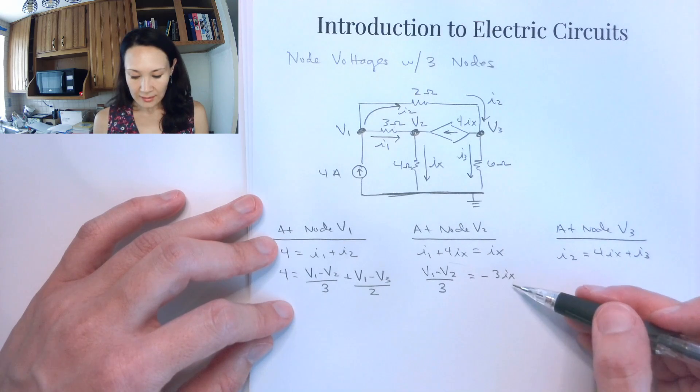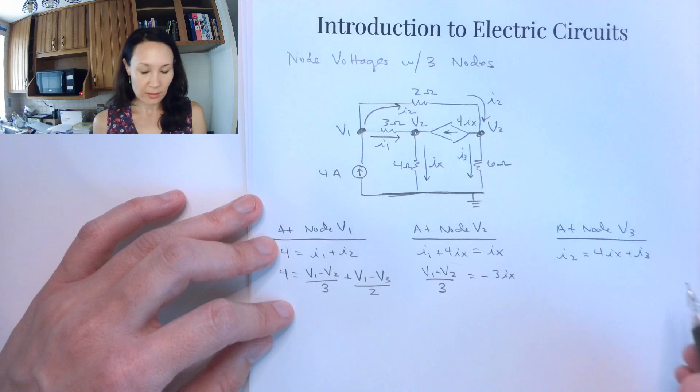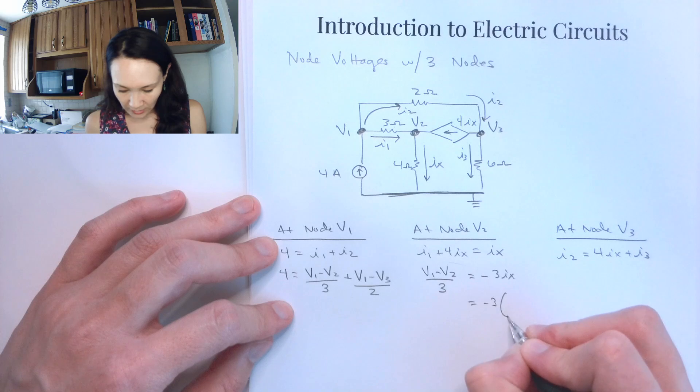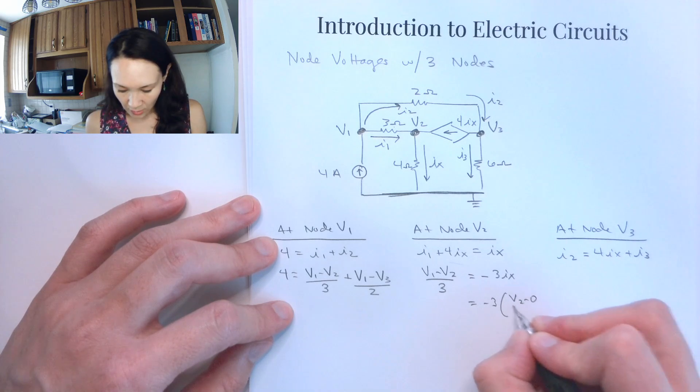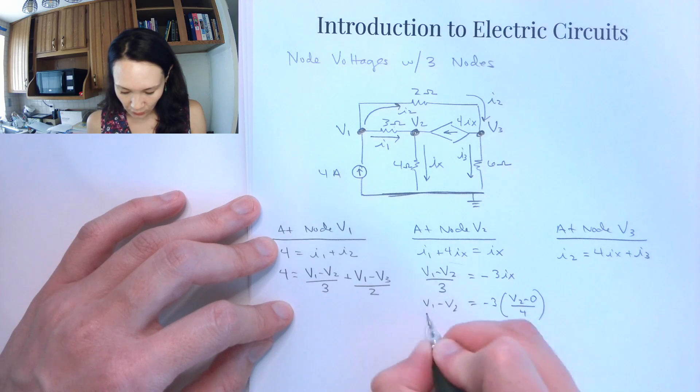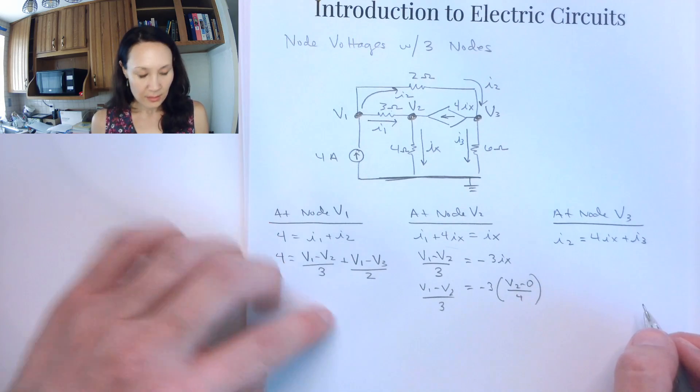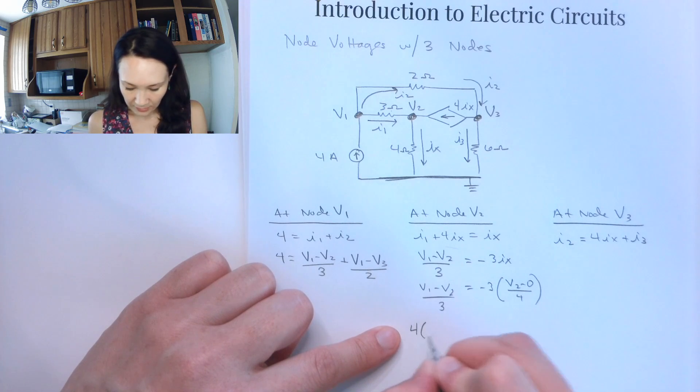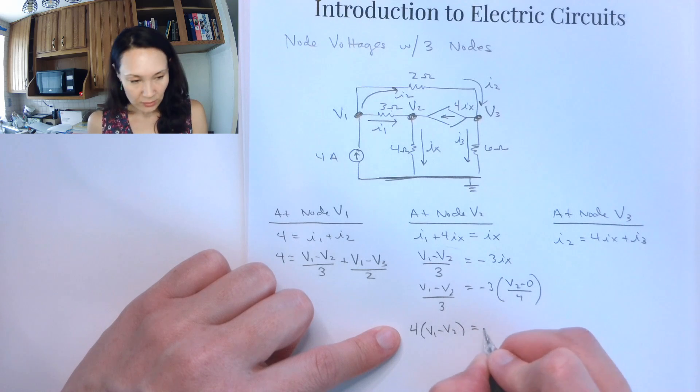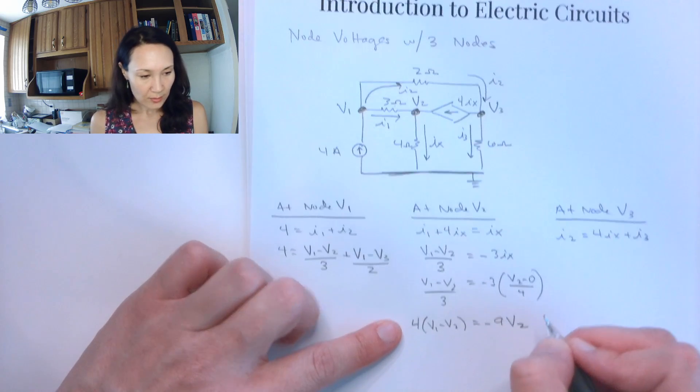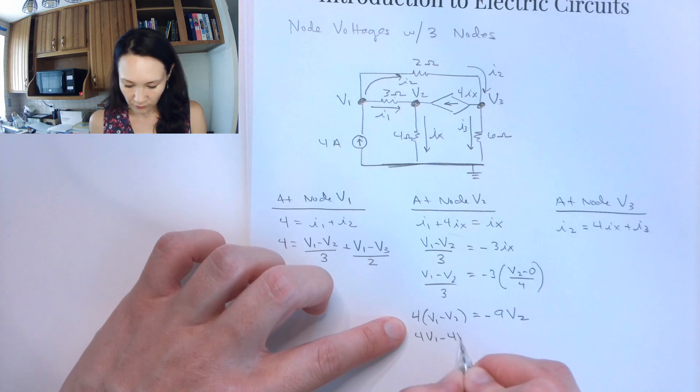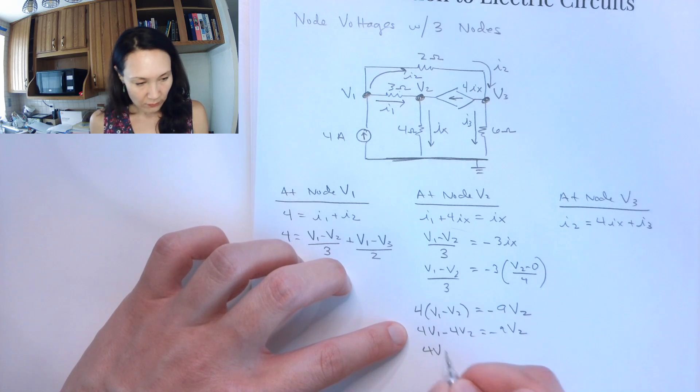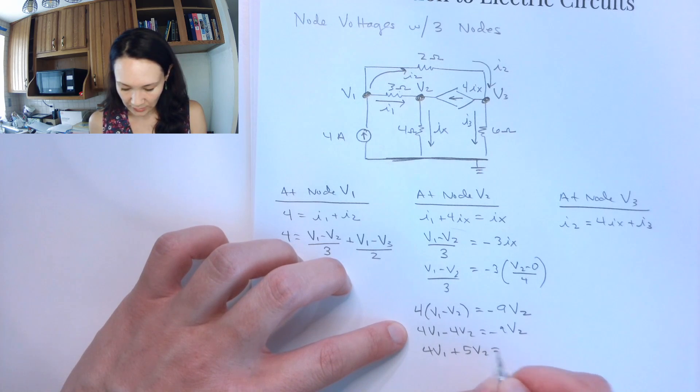And now instead of an IX in my equation, because I'm trying to get rid of all the currents, I'm going to have this in terms of V2. So let me go ahead and replace this with negative 3 times V2 minus 0 over 4. V1 minus V2 over 3 on the left-hand side. So then this is going to give me, if I multiply this side by 4, multiply this side by 3, I'll get 4 times the quantity V1 minus V2 is equal to negative 9V2. So this will be 4V1 minus 4V2 is equal to negative 9V2. Therefore, 4V1 plus 5V2 is equal to 0.